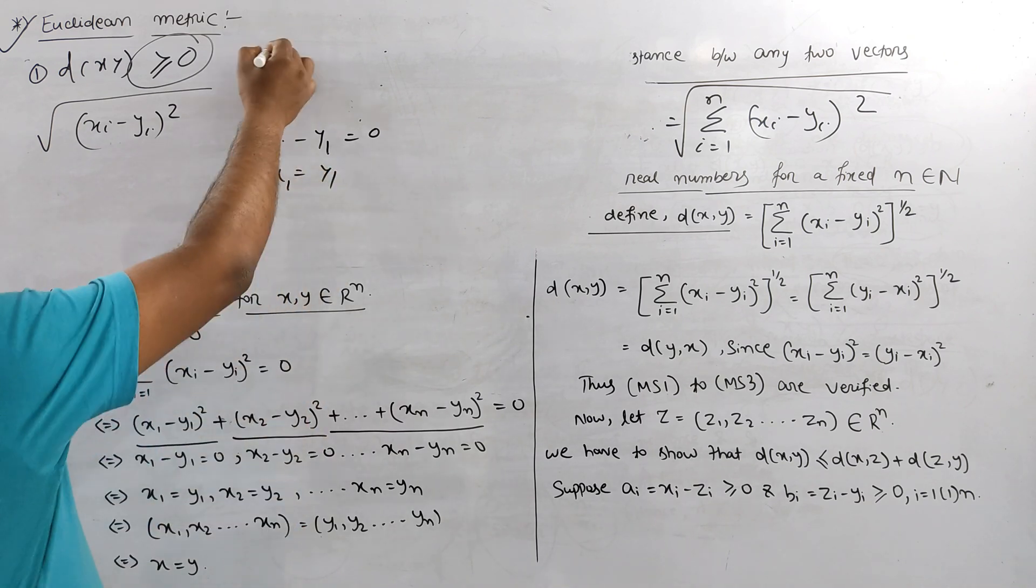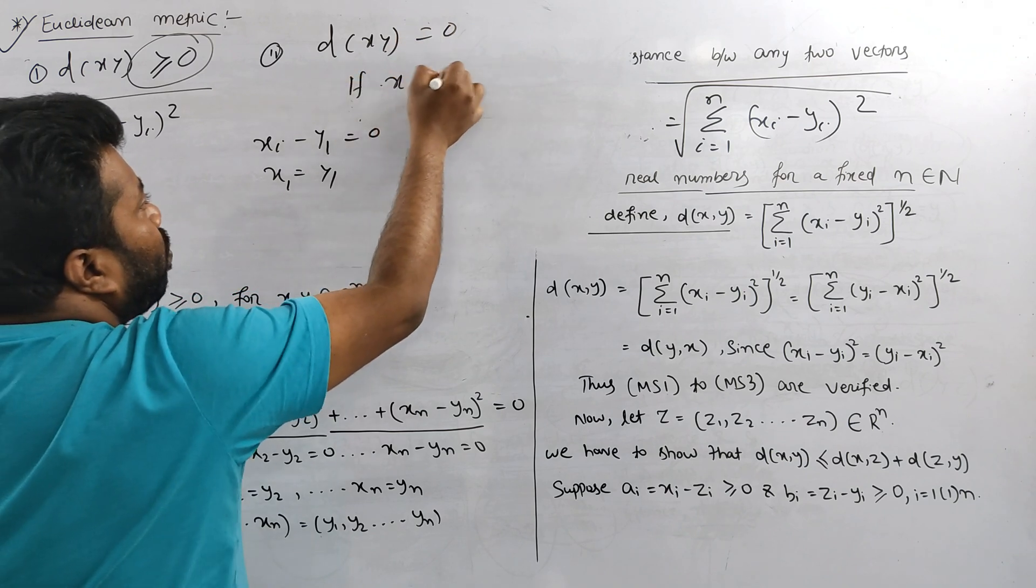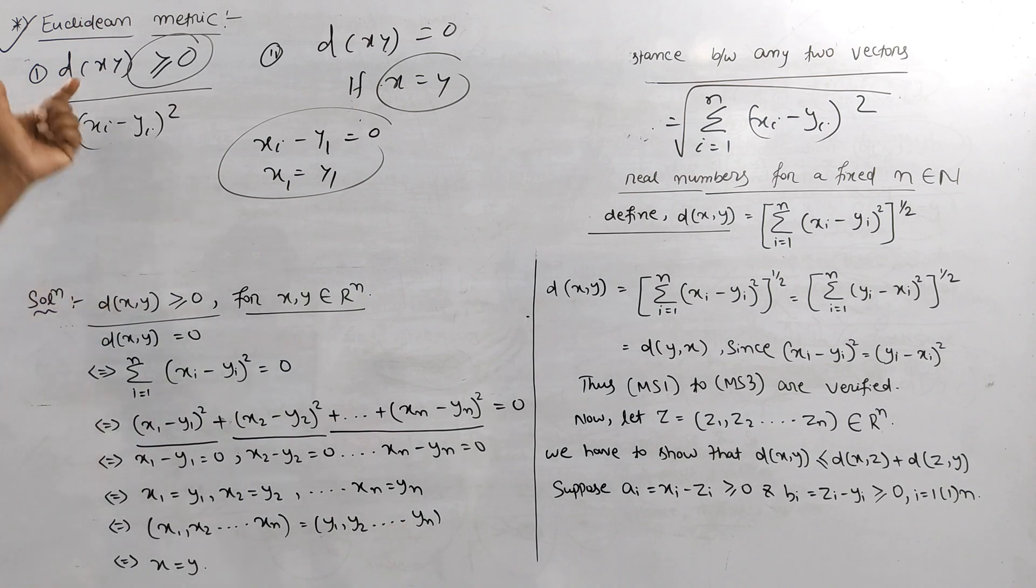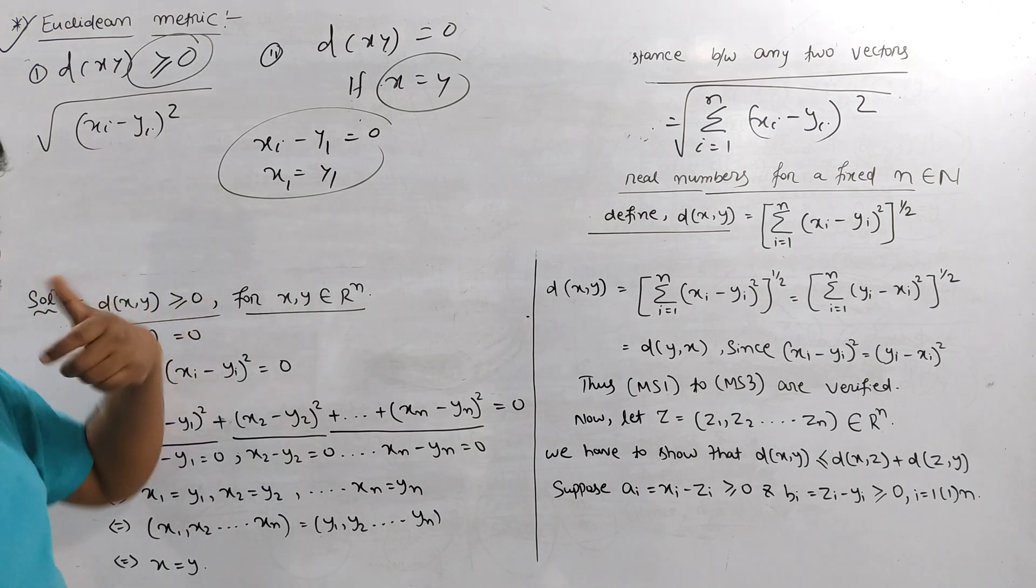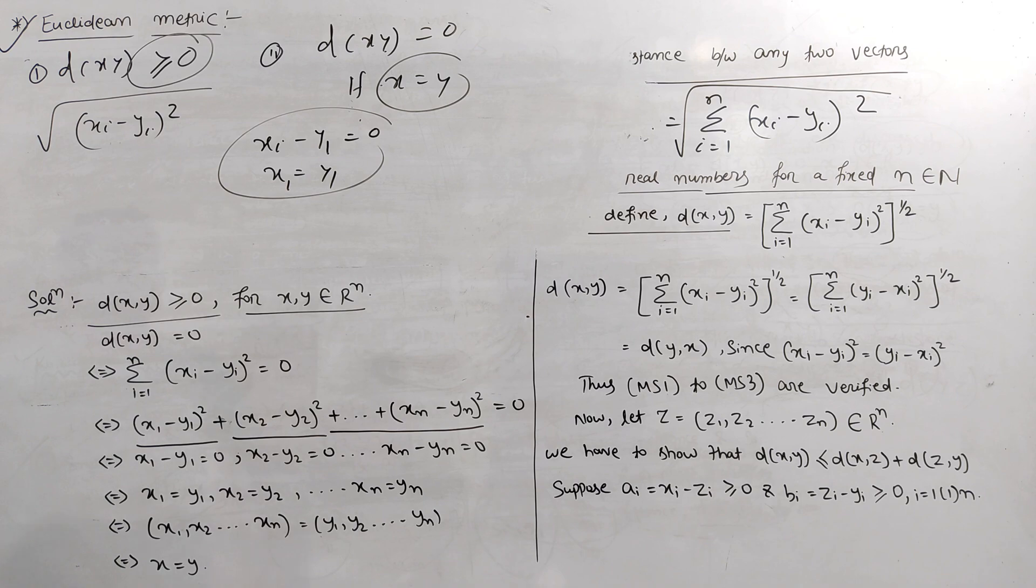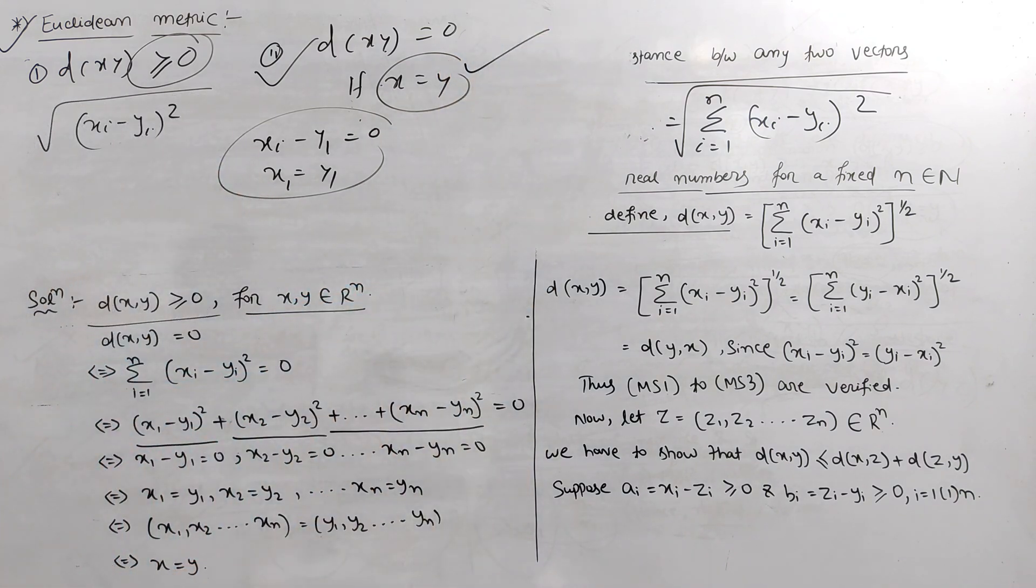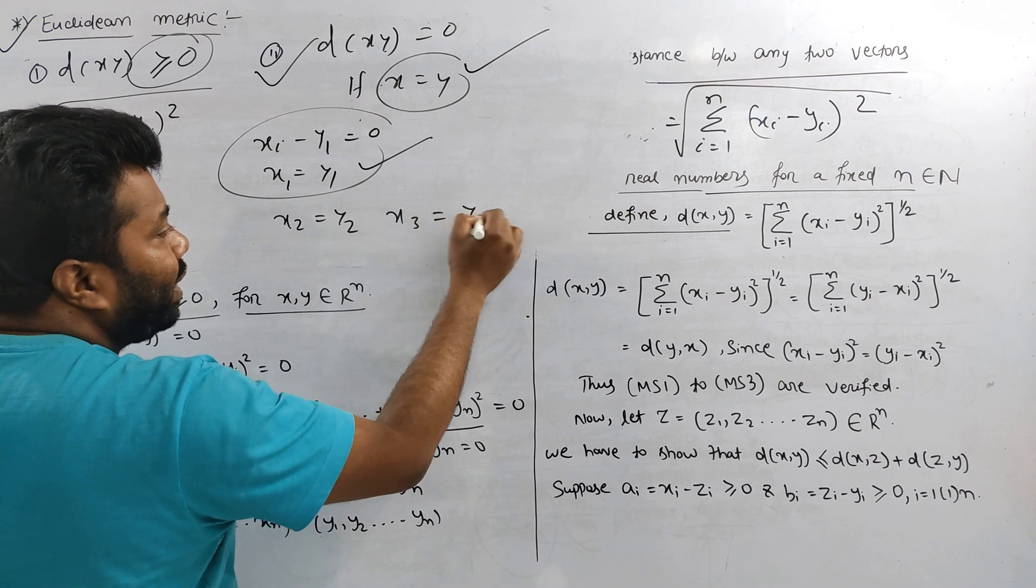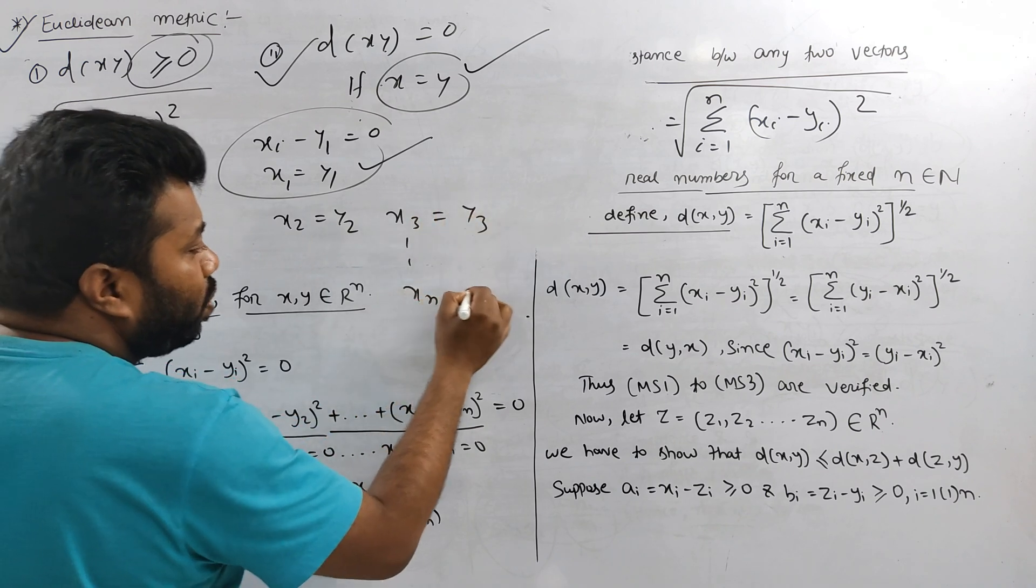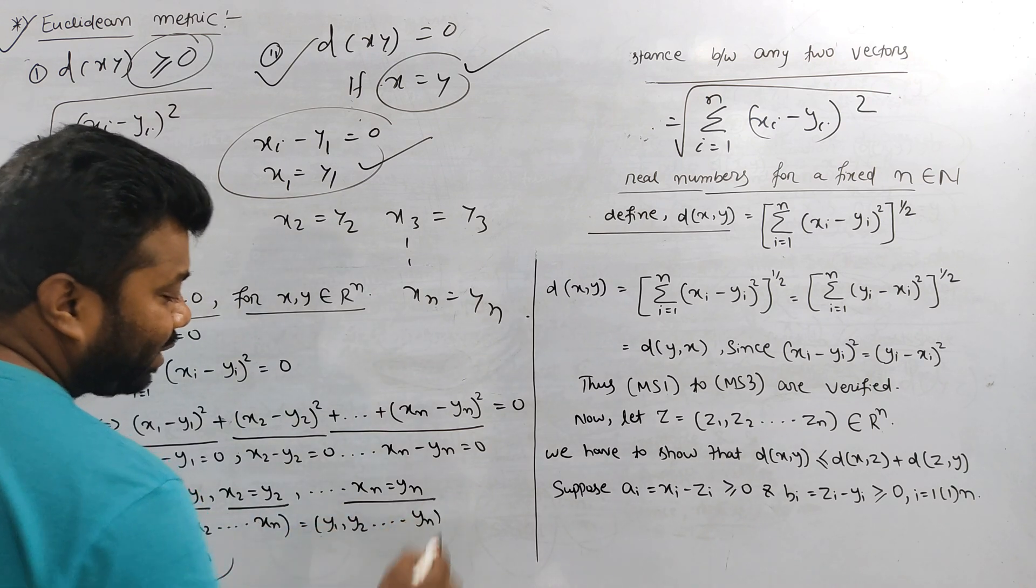Property 2 comes next. Property 2 is d(x,y) equals 0 if and only if x equals y. We will prove that this second property. Then x1 equals y1, x2 equals y2, x3 equals y3, xn equals yn.